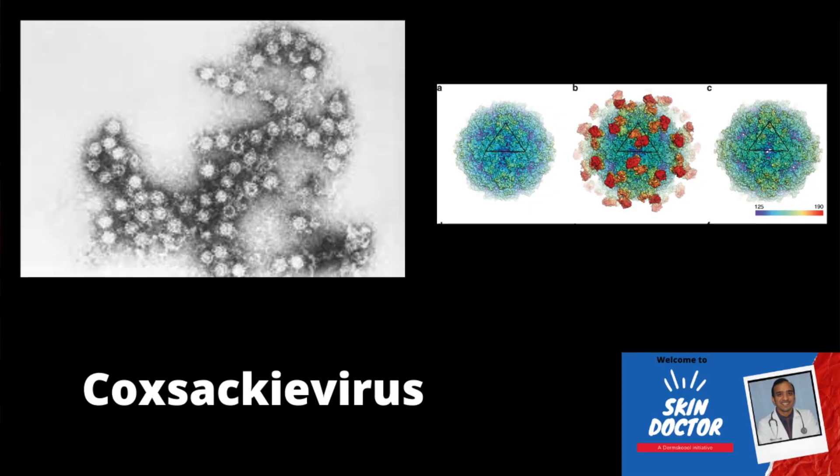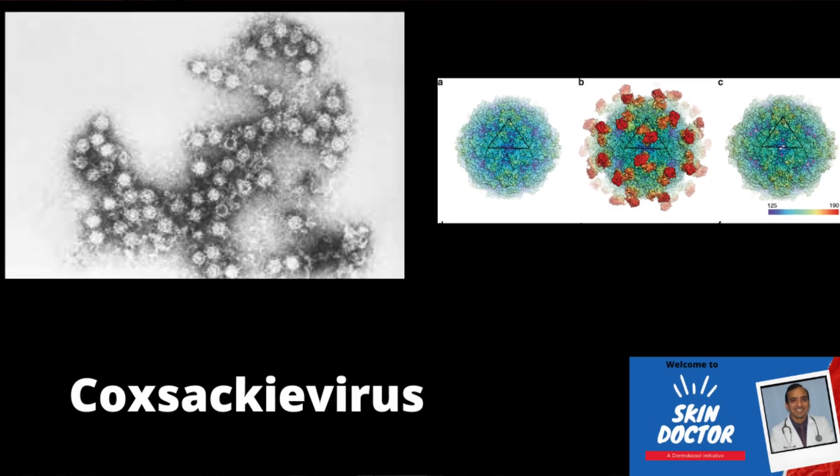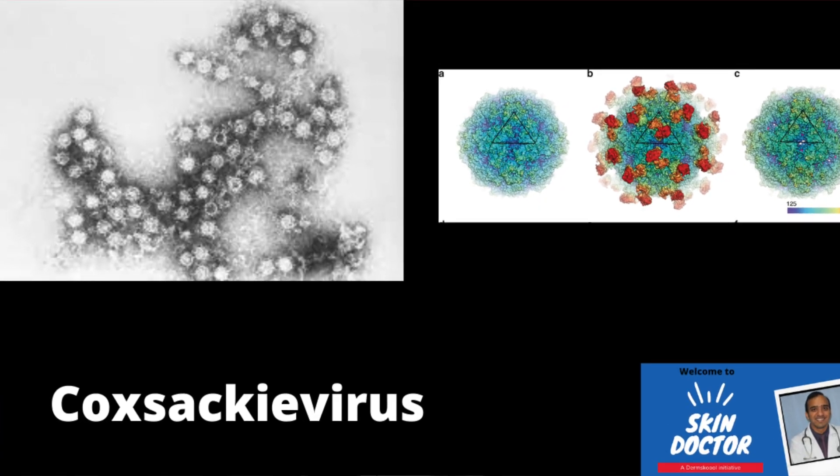The nails will grow back because the rate of nail growth is around three to four millimeters per month. Hand foot mouth disease is a viral infection caused by a virus called coxsackievirus, which belongs to the group of viruses called enteroviruses. There are different variants of this virus — it could be A16 or A6 — which usually cause the common form of hand foot mouth disease, and depending on the variant, the illness may be severe or mild.